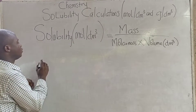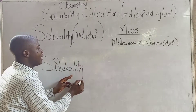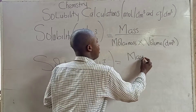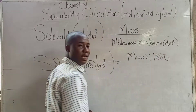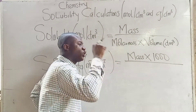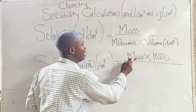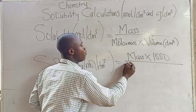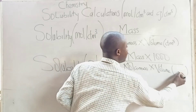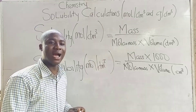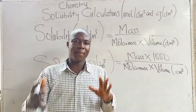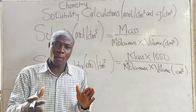We have another formula. If we don't use the first one, we can say solubility in moles per dm³ equals mass times 1,000 over molar mass times volume. We are adding 1,000 to the formula, which means the volume should be changed from dm³ to cm³. So it becomes mass times 1,000 over molar mass times volume, where the volume should be in cm³. These are the formulas to be applied.